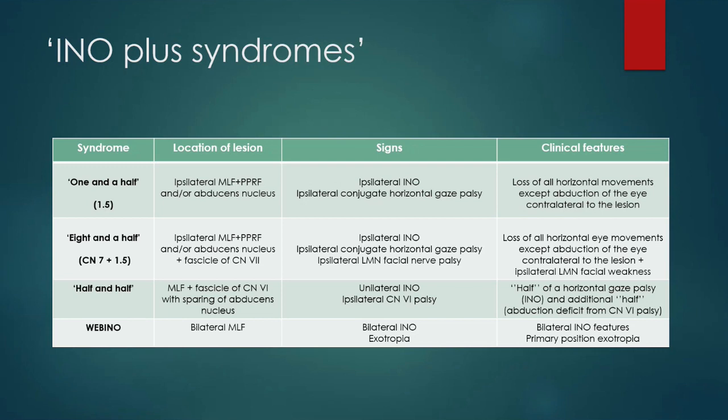In one-and-a-half syndrome, the patient has an ipsilateral medial longitudinal fasciculus and paramedian pontine reticular formation lesion or abducens nucleus lesion. The patient will have a combination of an ipsilateral INO and an ipsilateral conjugate horizontal gaze palsy, resulting in loss of all horizontal movements except abduction of the eye contralateral to the lesion. It's called one-and-a-half because one eye is not moving at all, and the other eye can only do half the movement it's meant to do.